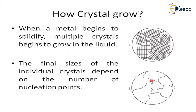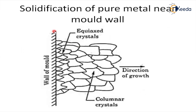After the formation of nucleation points and individual crystals, the final crystal structure forms grains with grain boundaries. Observing another image showing the mold wall: crystals form in a single direction. These grains are represented as columnar crystals, formed in a single direction which is represented as the direction of growth.